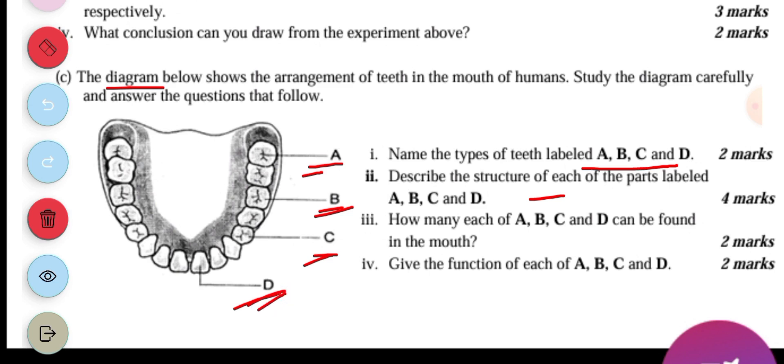So starting with the incisor. Incisor is chisel shaped and it has just one root. So the canine has the upper part to be pointed and also has one root. Then the premolar has more than one cusp on top and has two roots. Then the molars have more than two or three cusps on top and have three roots.